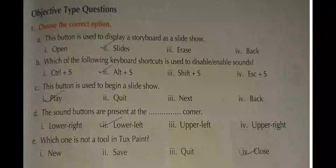Memorize and write these long questions. Now we will solve the book exercises. MCQ No. 1: This button is used to display a storyboard as a slide show - the answer is Slide. No. 2: Which keyboard shortcut is used to disable and enable sound? The answer is Alt + S.